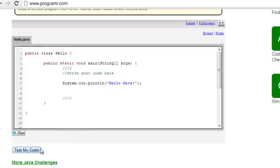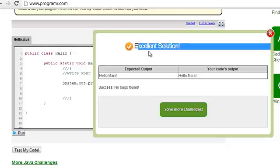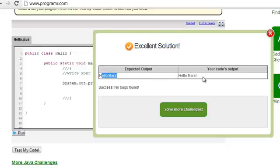It has printed hello mars. Now, let us submit it. So, see our solution is correct. Our expected output was hello mars and we have submitted the output. Great. We have written our first program.